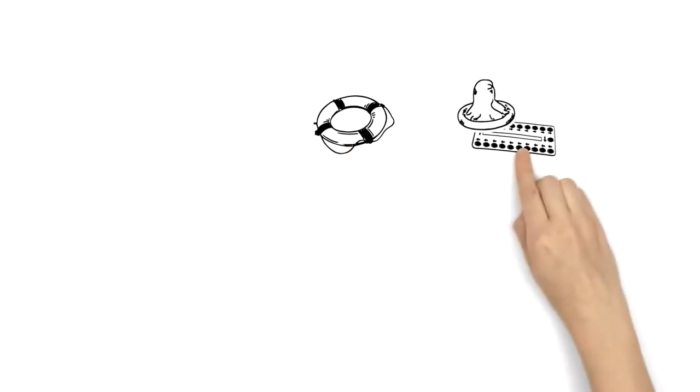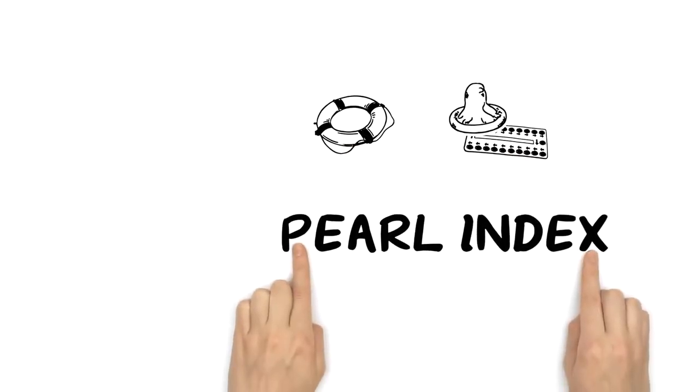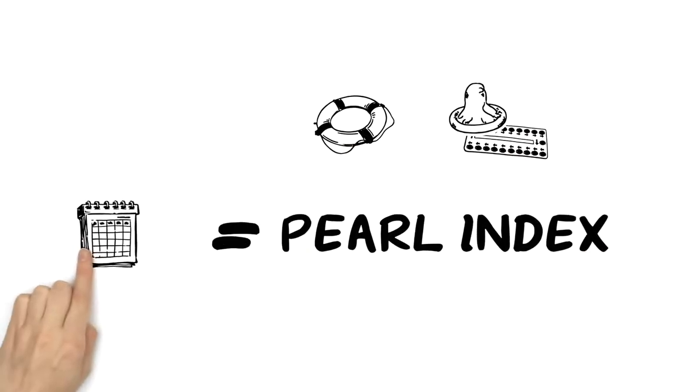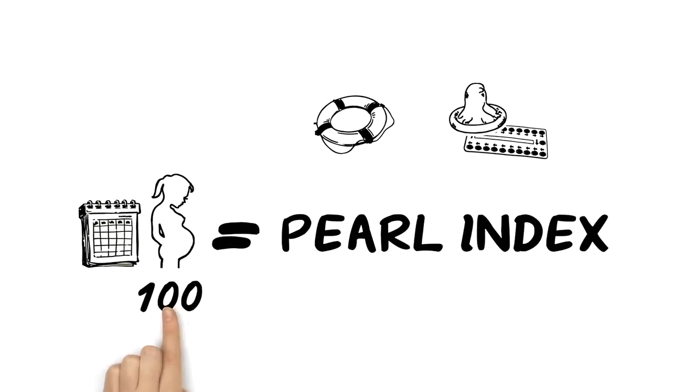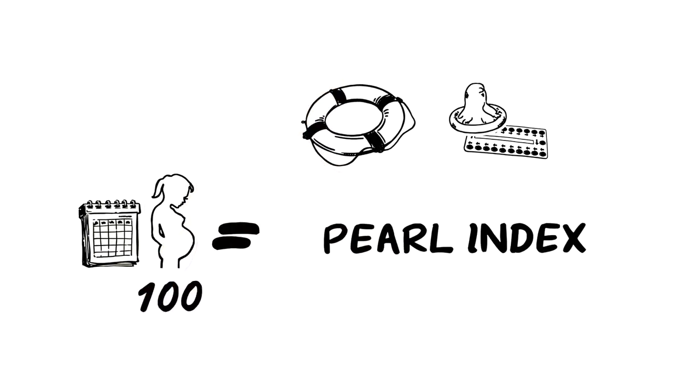You can check the safety of a method through the PEARL index, which calculates the annual number of pregnancies per 100 women. The safer a method, the lower the value.